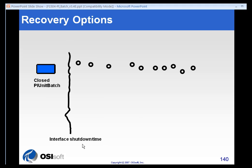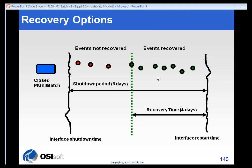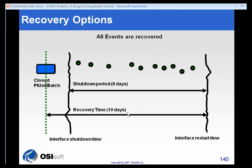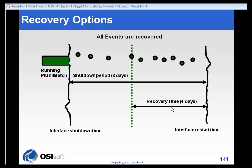Let's say we have a closed PI unit batch and the interface is shut down. We then see some more information come into our system before the interface starts up, and that shutdown period is actually eight days. So if we leave the default recovery time of four days, we will recover a certain number of values but not other values. If our recovery time had been ten days, we would have recovered all the batch information across this entire period. Alternately, if there is a running PI batch when the interface is shut down and data comes in over the same eight-day period, even though the recovery time is four days, we will recover all the events because there was a running PI batch. Sometimes it's better not just to rely on the fact that there was a running PI batch, but to increase your recovery time to what you think is reasonable for when you might notice that the batch interface is down.